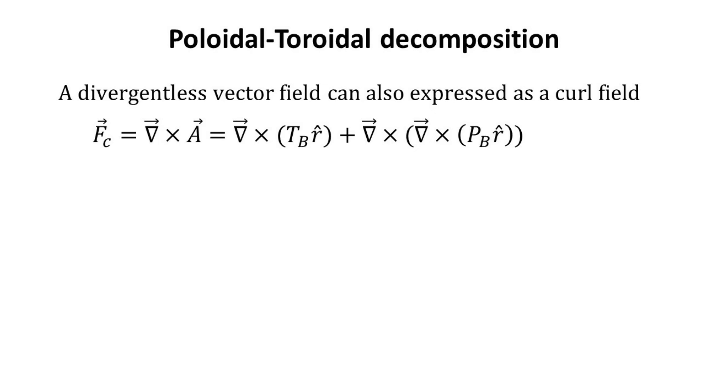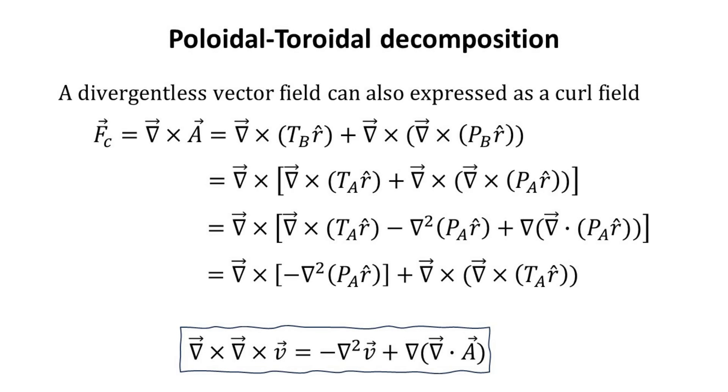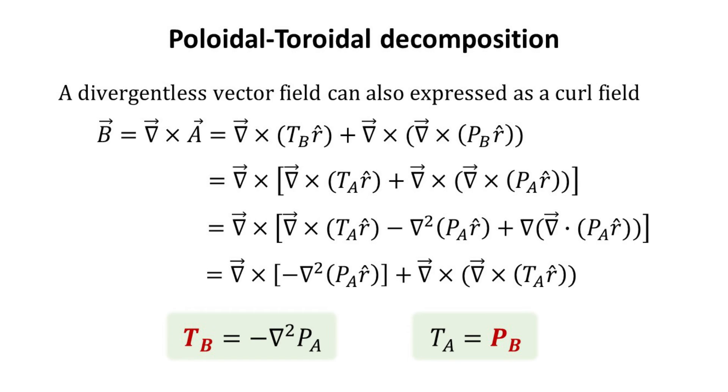Herein, the toroidal and poloidal scalar fields are denoted as T_B and P_B respectively. With some vector calculus, we can relate the toroidal and poloidal components of the vector potential A with the curl field F_C. Feel free to pause the video here if you would like to inspect the math. The final expressions which relates T_A and P_A with T_B and P_B are shown here.